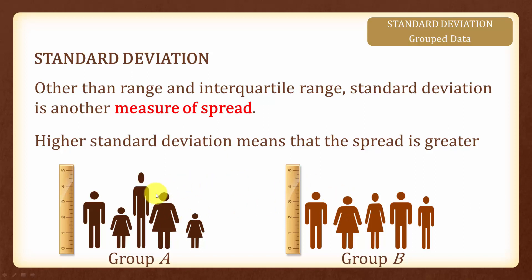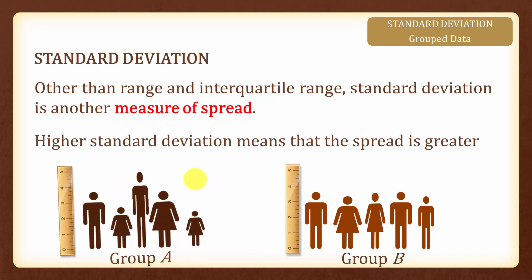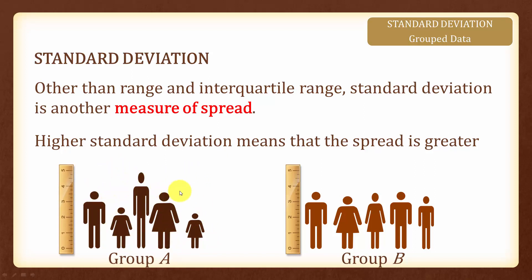Each group has 5 people each. If we measure the heights of these two groups, which group do you think will have a higher standard deviation? Group A will have a higher standard deviation because the spread of their heights is greater.